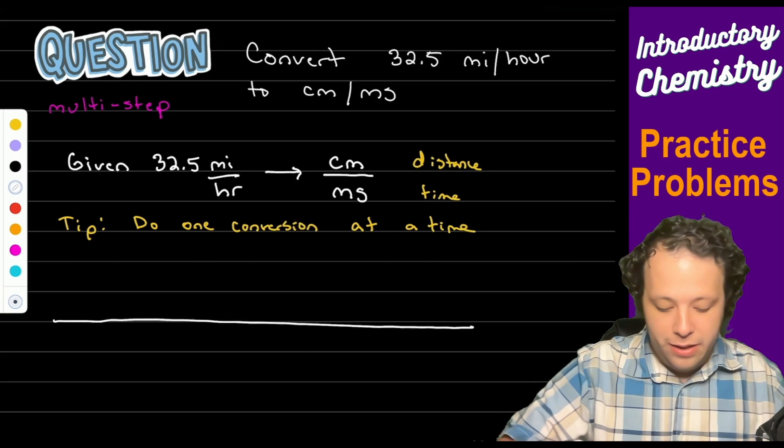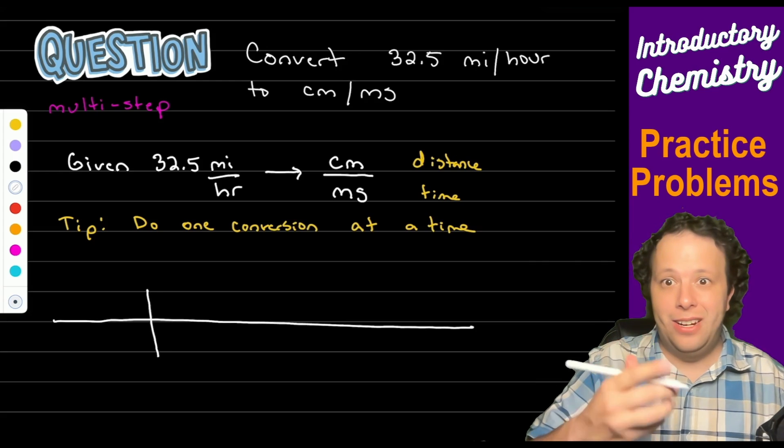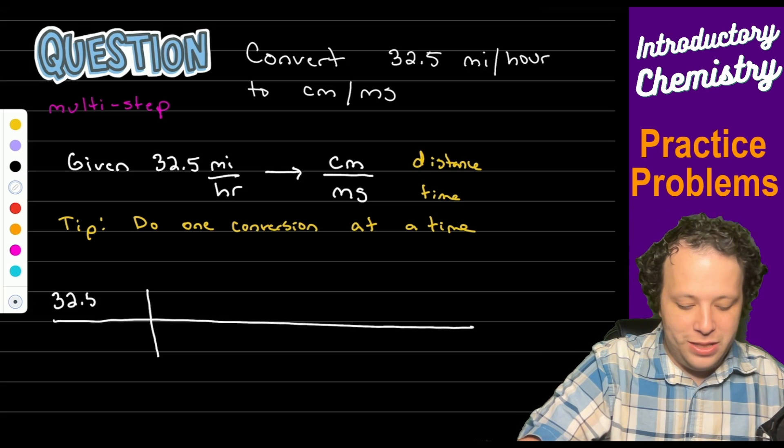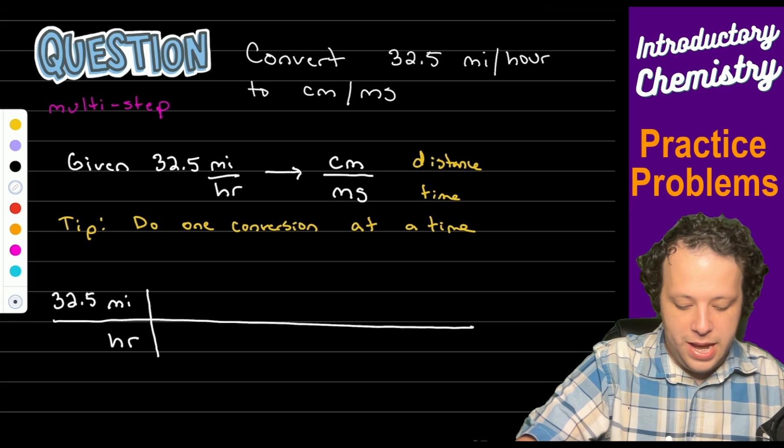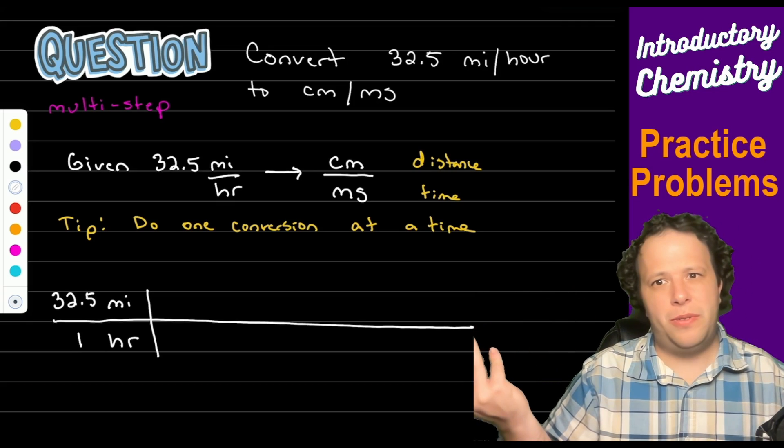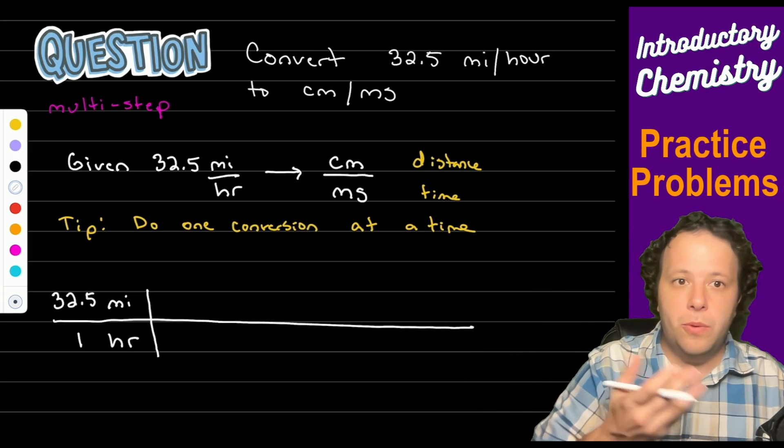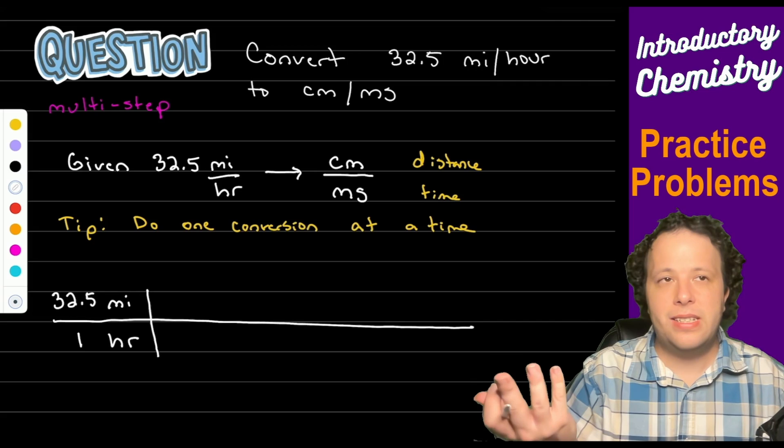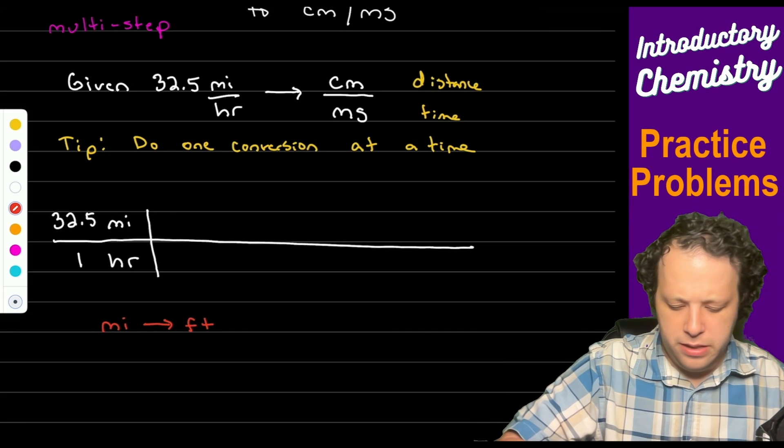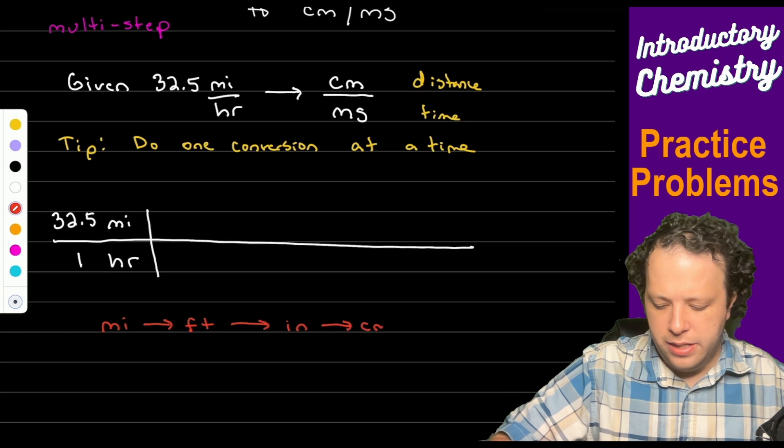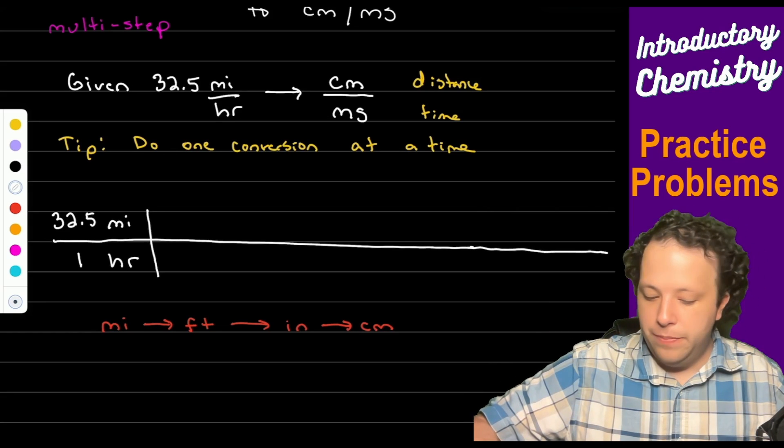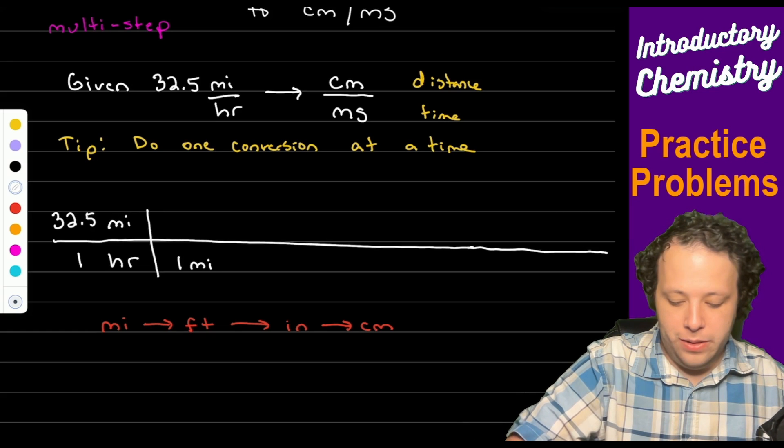So when you are doing these the first tip is do one conversion at a time. Meaning that when you kind of look at these you have distance on top and time on the bottom. You want to either do distance, all distance until you get to your final unit, or do all time until you get to your final unit. So it'd be really helpful if you have any of your little unit sheets that way you can try to see how you can find those conversions. We have our 32.5 miles that will be over an hour. Let's first do miles first. So with this one, how do we get the centimeters? Well if we try to map it out for ourselves, we can go from miles to feet to inches and then to centimeters.